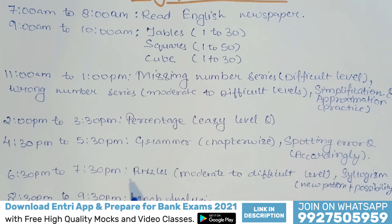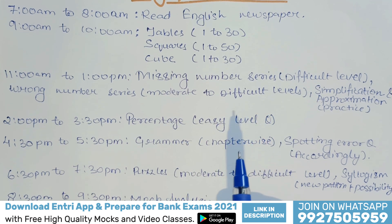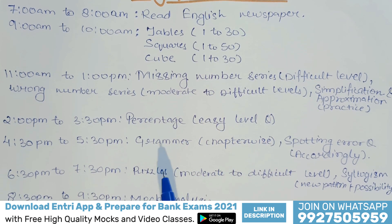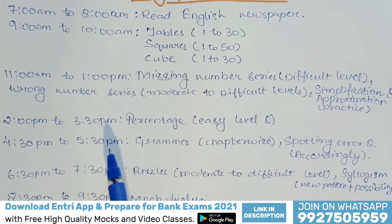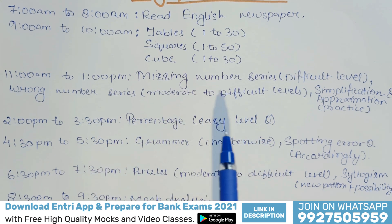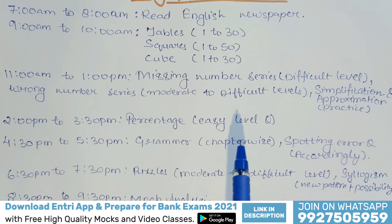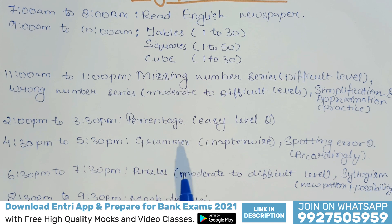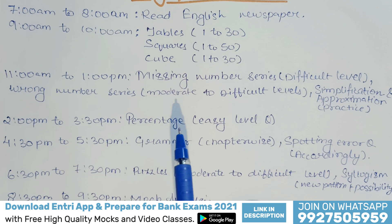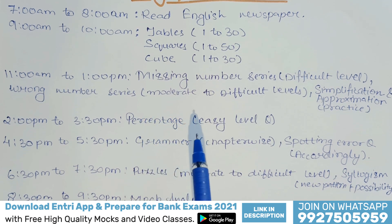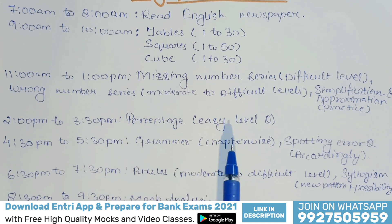From 2pm to 3:30pm, you have to do percentage easy-level questions. I always start with averages and then move towards percentage, because percentage plays a role in all other chapters as well — be it mixture and allegation, be it DI. Percentage is a very important and essential part of quantitative aptitude, so cover this chapter thoroughly starting with easy-level questions first.